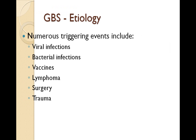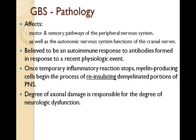There are numerous triggering events, but Guillain-Barré is usually associated with a viral infection. Most people affected will report a recent infection or recent vaccination. Guillain-Barré affects the motor and sensory pathways of the peripheral nervous system as well as the autonomic nervous system functions of the cranial nerves. It is believed to be an autoimmune response to antibodies formed in response to a recent physiologic event such as infection or vaccination.